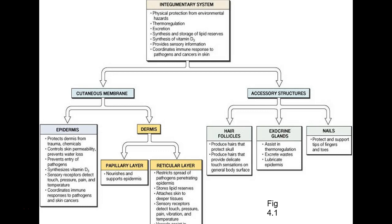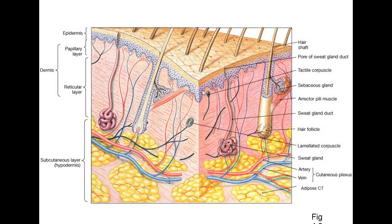This slide sums everything up. We'll go into the epidermis versus the dermis, the two layers of the dermis, the five strata of the epidermis, and then hair follicles, glands, and nails. I have a model that looks very similar to this and I'll post a review with some photos and slides that could show up on the tests.